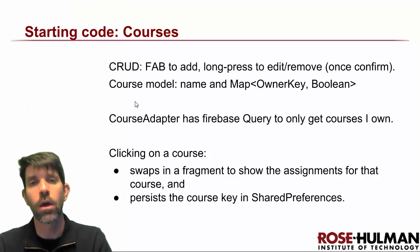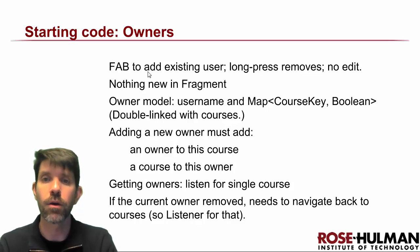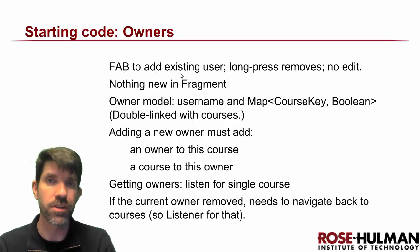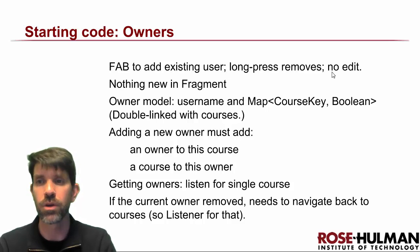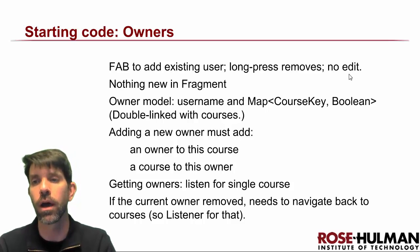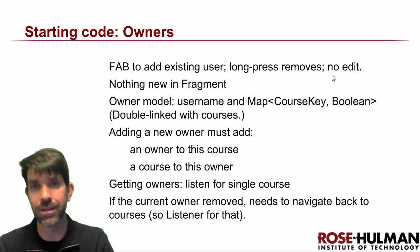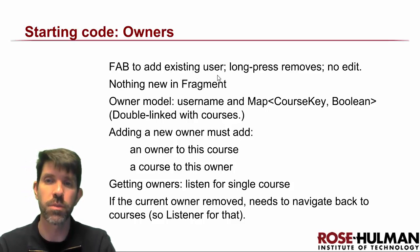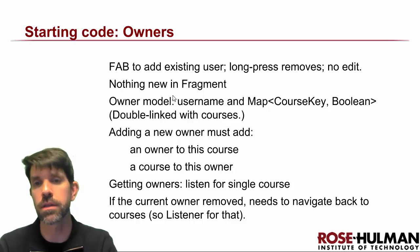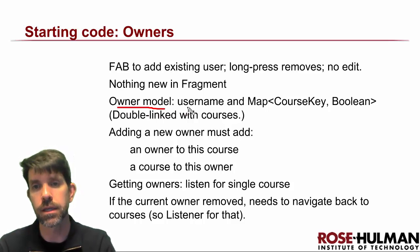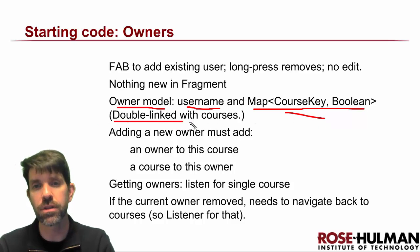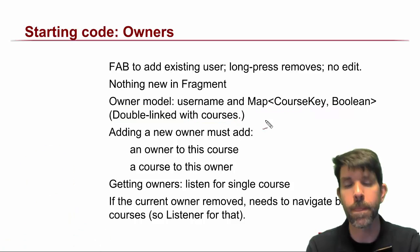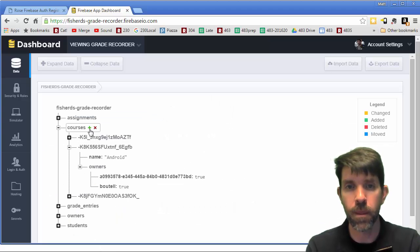Next is owners. Owners has almost a full CRUD interface - it's more CRD since we didn't see the need to edit an owner. Owners can only be existing users on our app so it's hard to mess that up. The owner model has a username and a map of course keys, so an owner has courses. This creates a double-linked structure where things are linked in both directions.